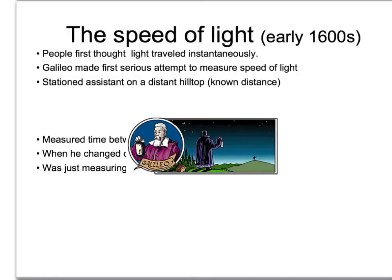One of the first ways to measure the speed of light came from Galileo. Before Galileo, people thought that light traveled instantaneously from one place to another. Galileo made the first serious attempt to measure light.